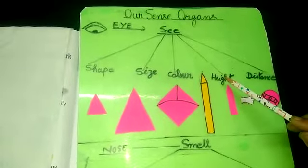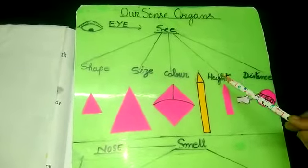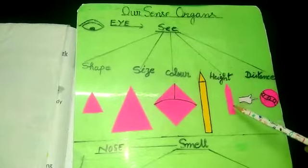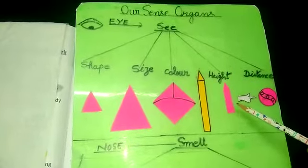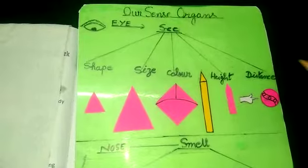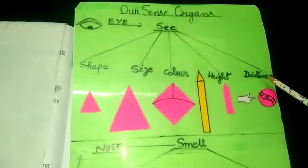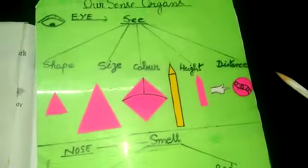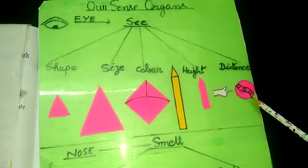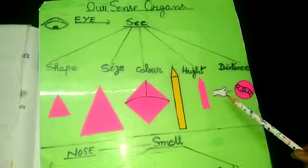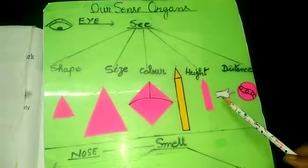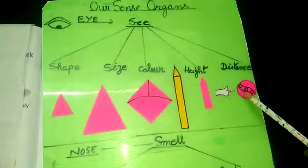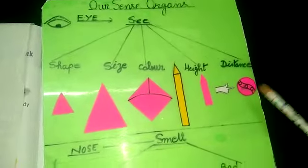Height — height मतलब उंचाई. Yellow pencil is higher than the pink pencil. Now, distance — distance मतलब दूरी. The ball is far from me. ये आपको show करता है कि ball मुझ से दूर है.